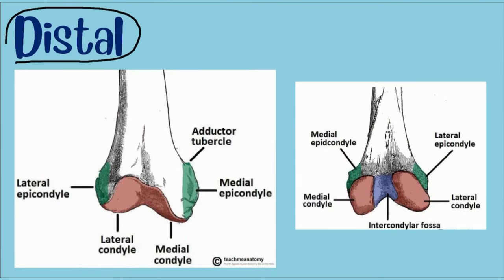Now we are going to discuss the distal part of the femur. The distal end of the femur is characterized by the presence of medial and lateral condyles, which articulate with the tibia and patella to form the knee joint. The medial and lateral condyles are rounded areas at the end of the femur.